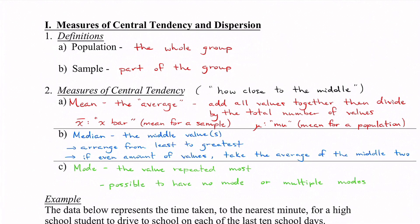The symbol we use for mean has two versions. It's either x with a bar above it — called x-bar — which is the mean for a sample, or the Greek letter mu (μ), which is for a population when you take the entire population. So x-bar is for a sample, mu is for a population.